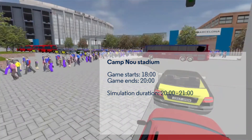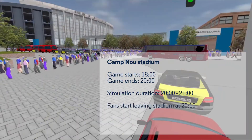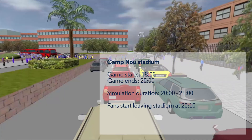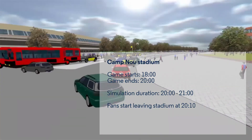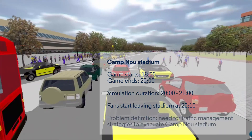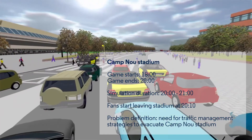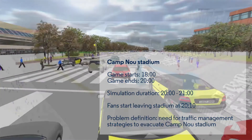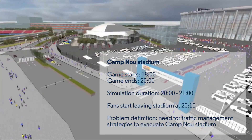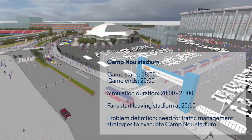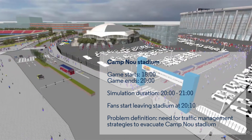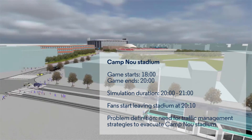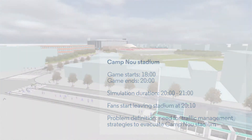When the match is over, vehicles leave the stadium as soon as possible at around 8 to 10pm. Our task is to see if all the vehicles can leave in a timely manner and how we as transport modelers can mitigate their impact on other traffic in the network.